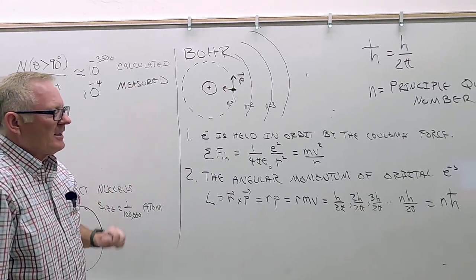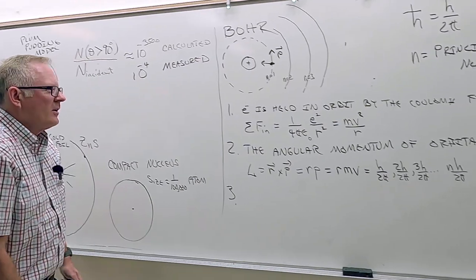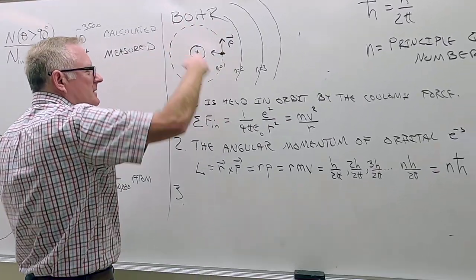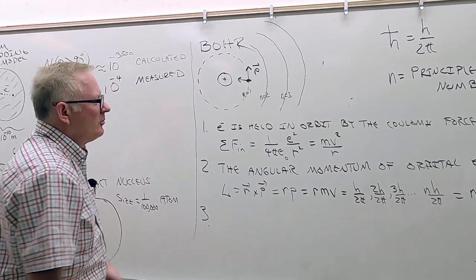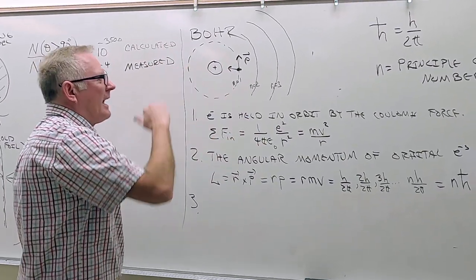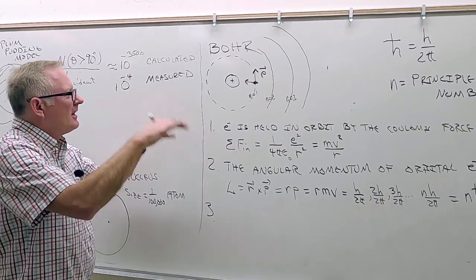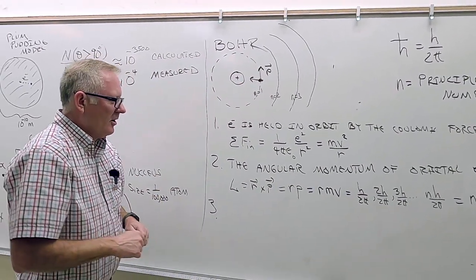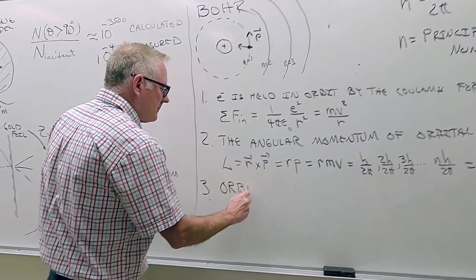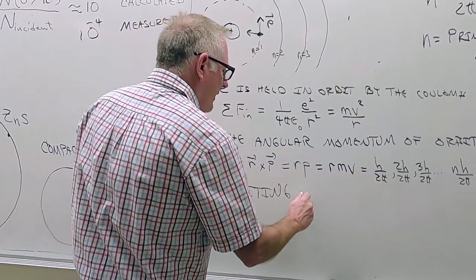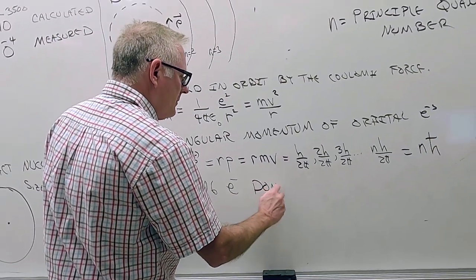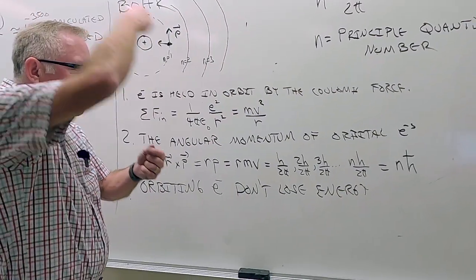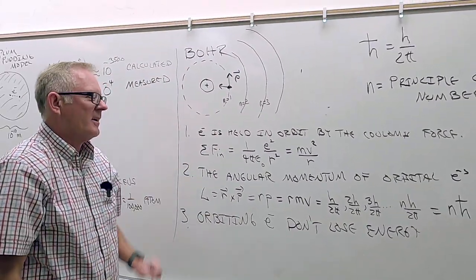The third postulate addresses the classical problem: normally an accelerating charge radiates, and this electron has centripetal acceleration v²/r — it should radiate, lose energy, and spiral in. But Bohr said that in this case orbiting electrons don't lose energy. We'll have to figure out why that is, but he simply postulated it.